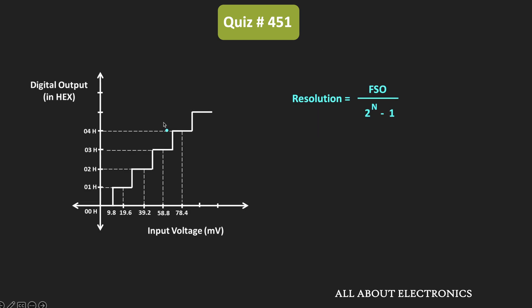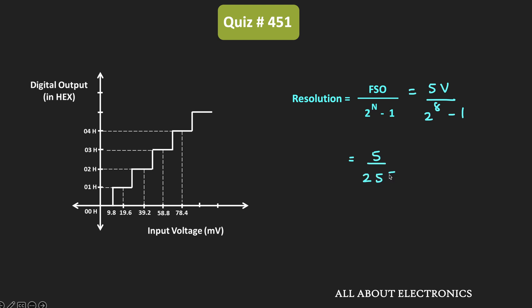First of all, for this 8-bit ADC, let us find its resolution. The resolution is given as the full-scale output voltage divided by 2 to the power n−1, where n is the number of bits. Since the input voltage range is 0 to 5V, the full-scale output voltage is 5V. Therefore, the resolution equals 5V divided by 2^8 − 1, that is 5 divided by 255, which comes out to 19.6mV.